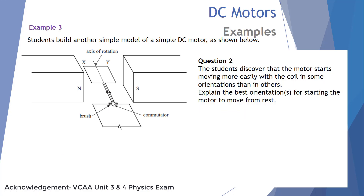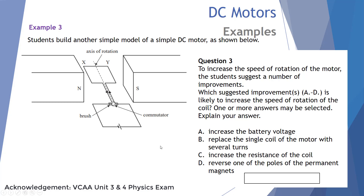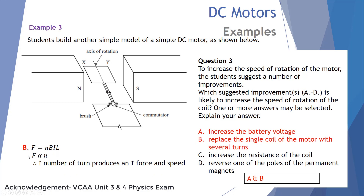Question 2: The best orientation for starting the motor from rest is when the coil is horizontal, because the forces on opposite sides of the coil are at right angles to the face of the coil — the torque or turning effect is maximum. Question 3: To increase the speed of rotation, option A — increasing the voltage — produces greater current, and since F = NBIL (force is proportional to current), greater force and therefore greater speed results. Option B — increasing the number of turns — also works, since F = NBIL means force is proportional to N, giving greater force and speed.